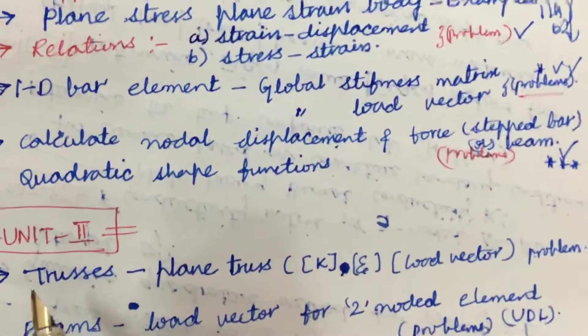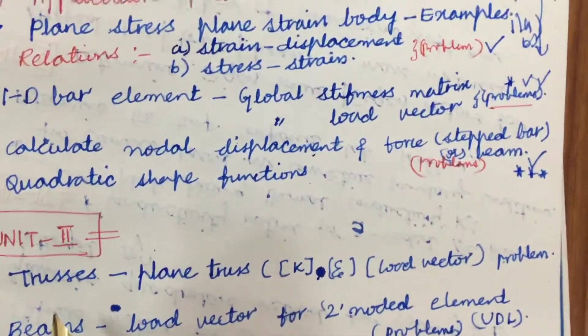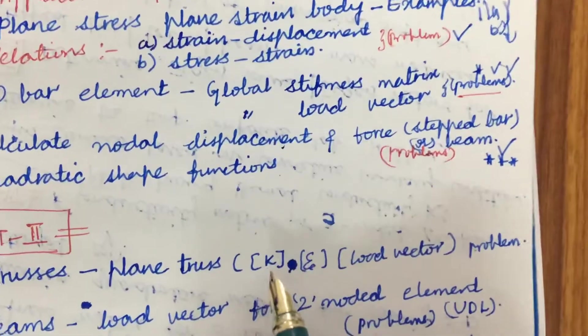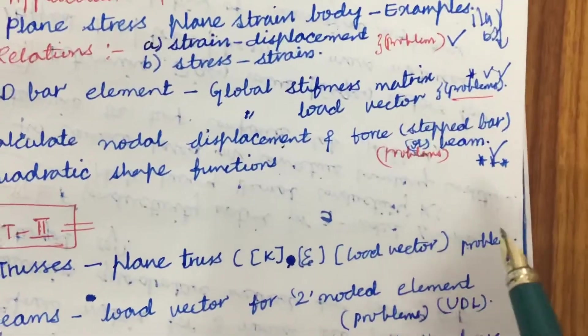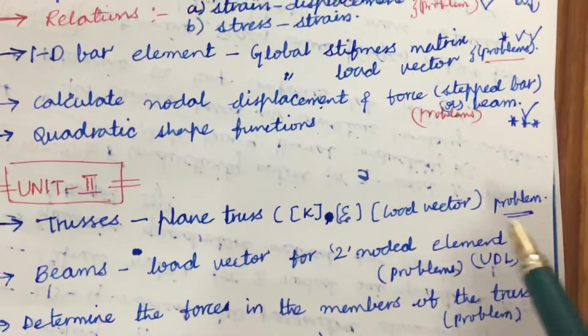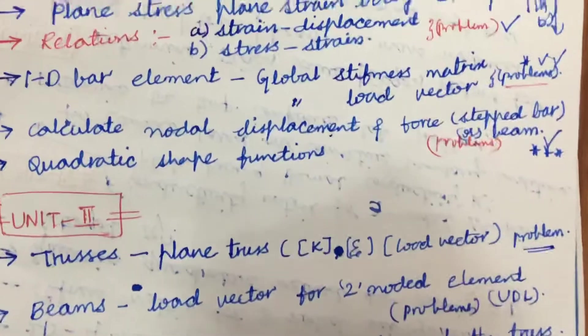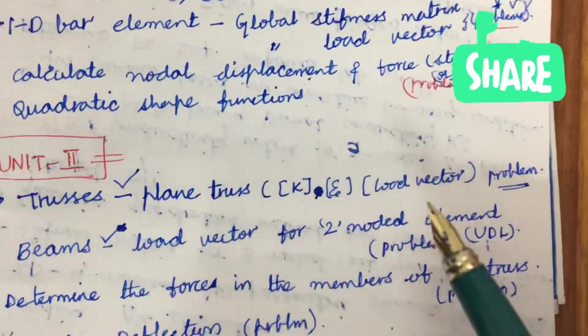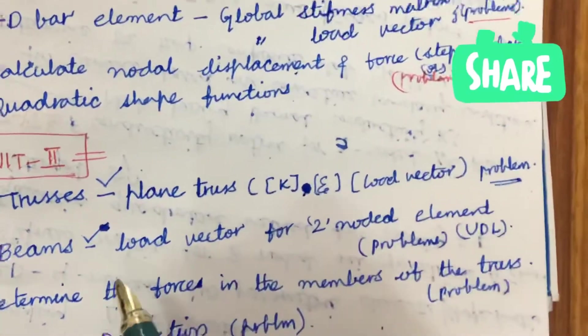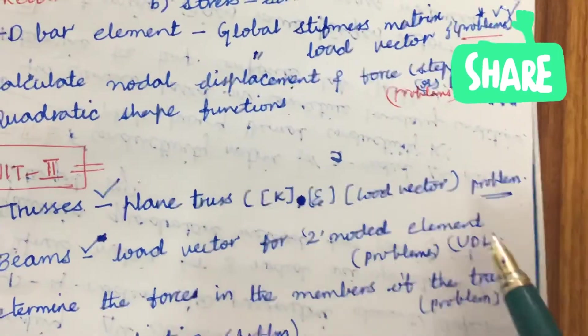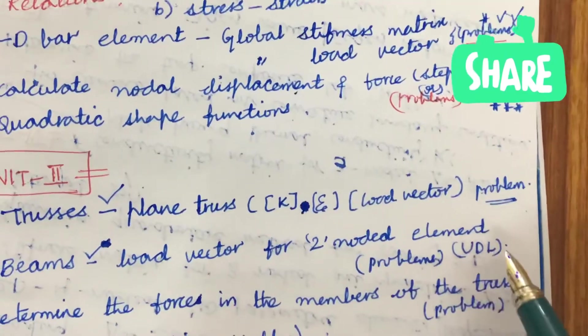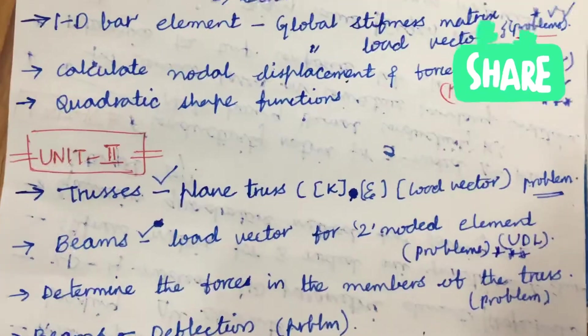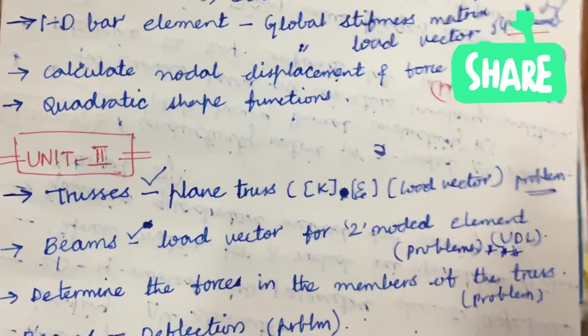Later, Unit 2 is all about the trusses. They are going to ask you to derive the plane stresses for the stiffness matrix or the strain energy or the load vector, and problem related to it. It consists of two questions. One may be from the trusses, another question from the beams. That is all about the load vector for two-nodded element uniformly distributed load, along with the problem. Sometimes they may be asking the derivations as well as the B question may be the problem.